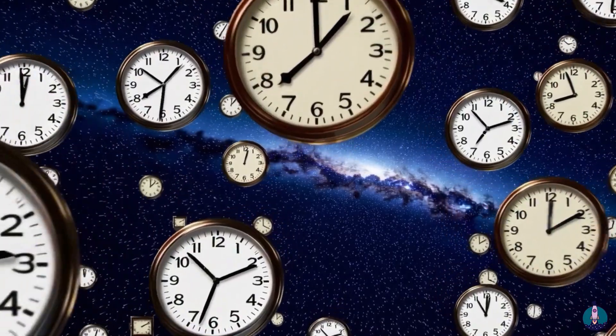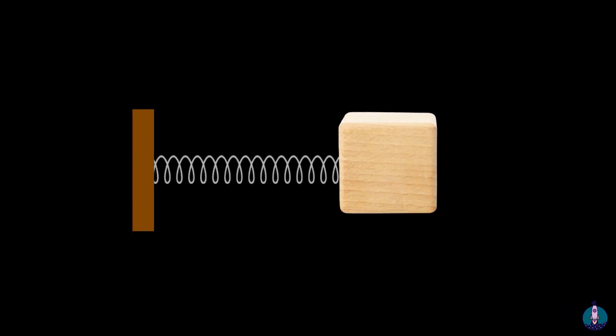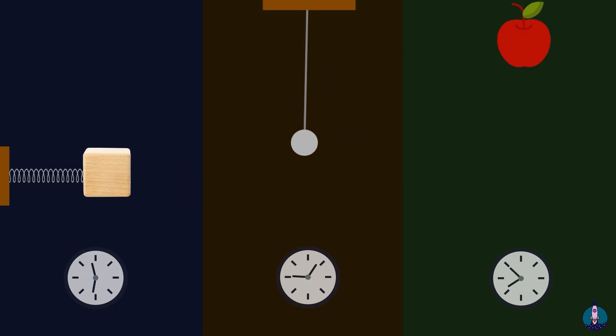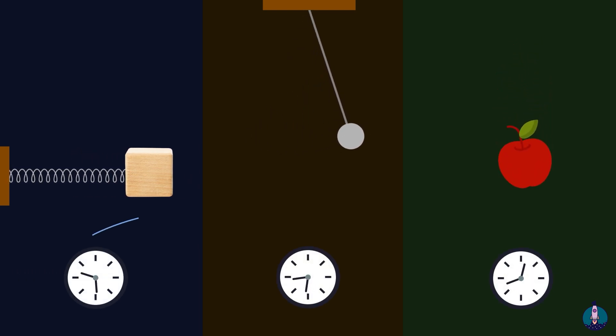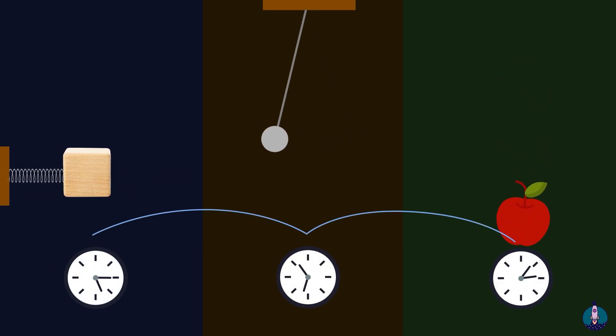Every point in space has its own time. Physics does not describe how things evolve in single universal time. It shows how things evolve in their own local times and how these different times relate to each other.